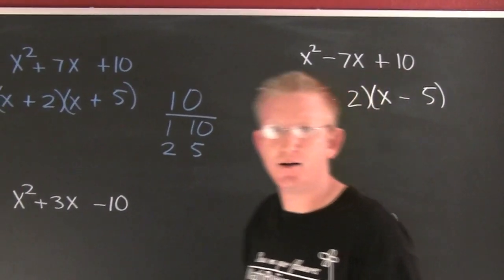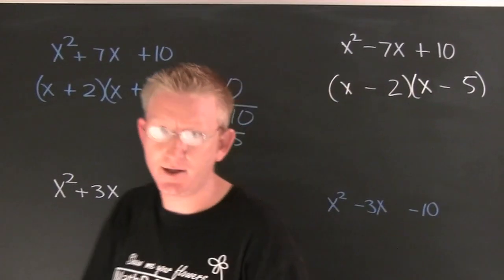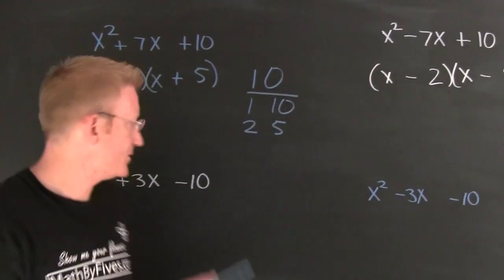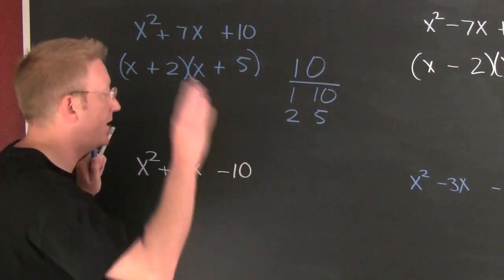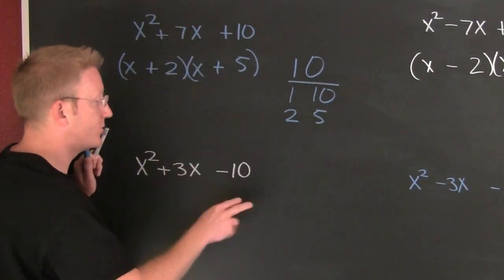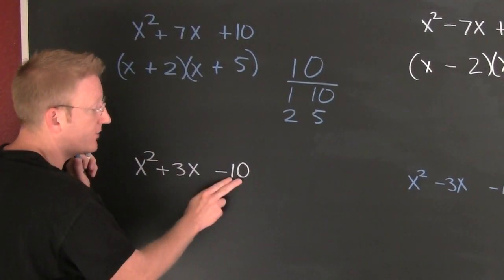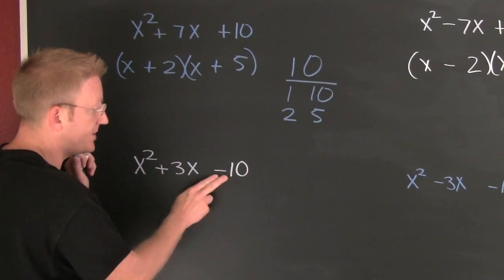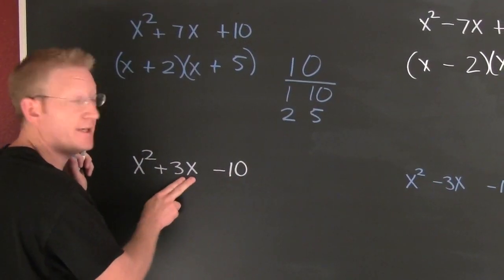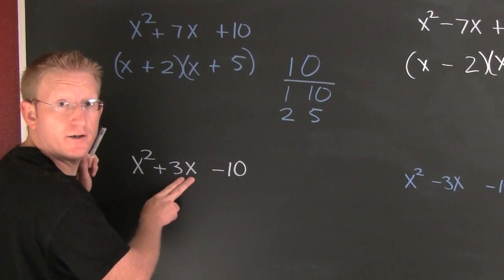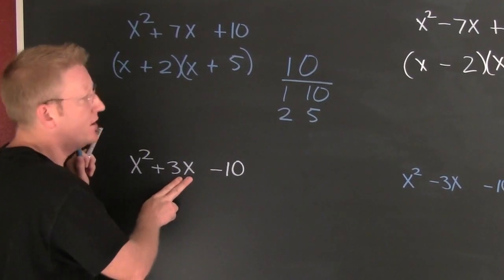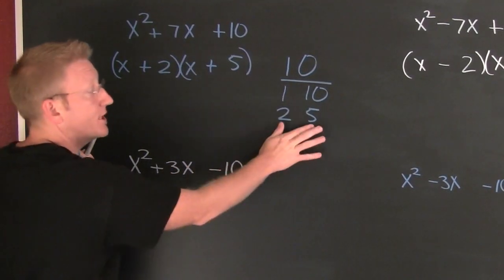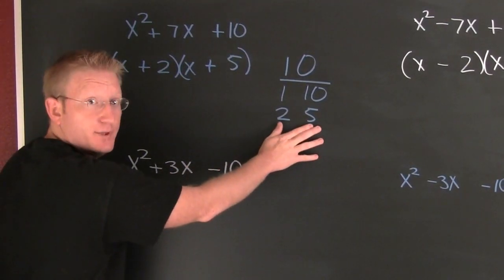If you don't believe me, check it — how would you check that? Foil! Foiled again. Let's go down to this example. Here's how this story goes: we're looking for the factors of 10 that subtract to be 3. Looks like we got 5 and 2 again.